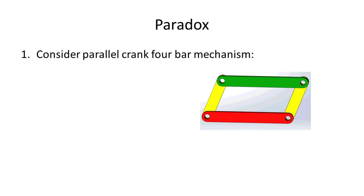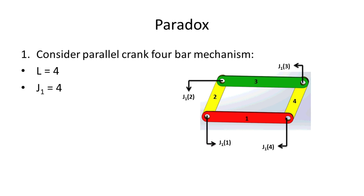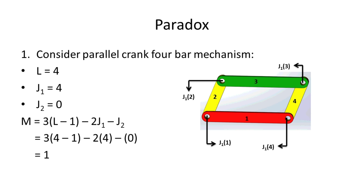We will now discuss the paradox. Gruebler paradoxes are linkages that do not behave as predicted by the Gruebler equation. For Example 1, consider a parallel crank 4-bar mechanism. This mechanism has 4 links, 4 joints with one degree of freedom, and 0 joints with two degrees of freedom. By the Gruebler Criterion, the degree of freedom computes to 1.